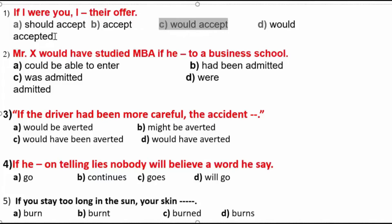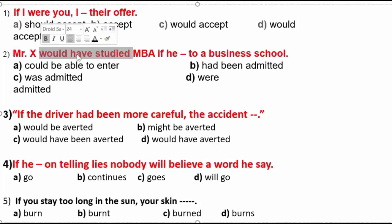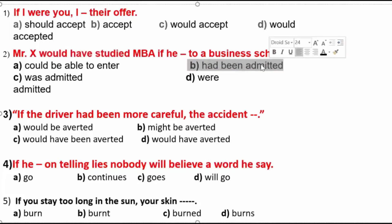Mr. X would have started MBA if he — we can see would have started, so would have means our if-clause must use had plus B3. Had been admitted. The answer is had plus B3 — past perfect. The answer is had been admitted.